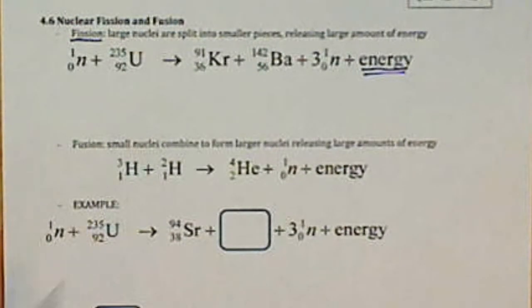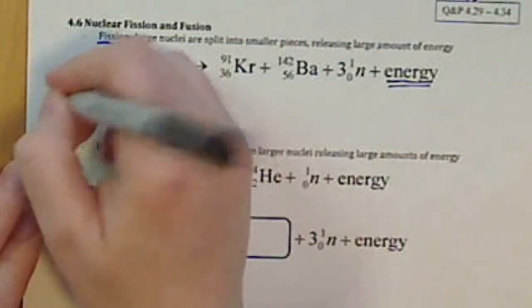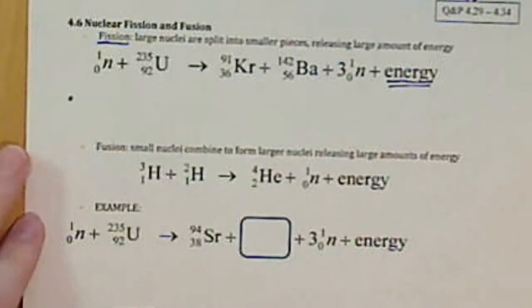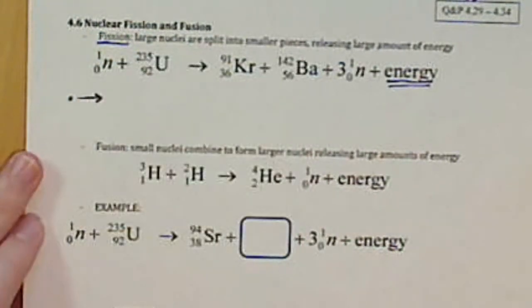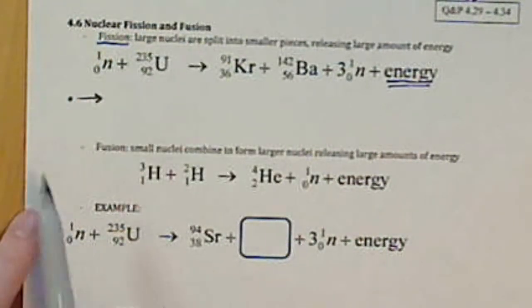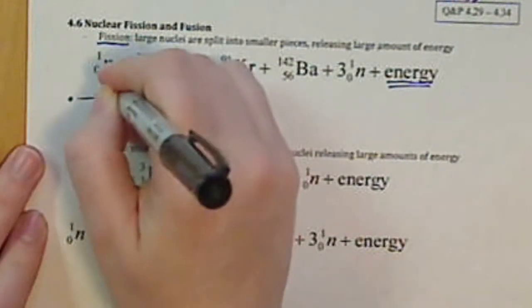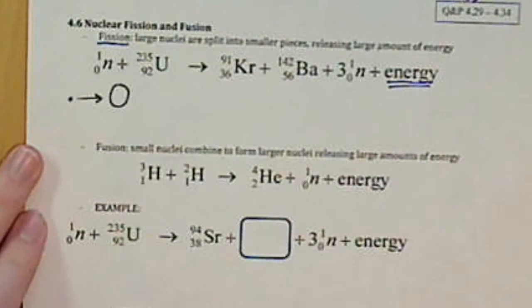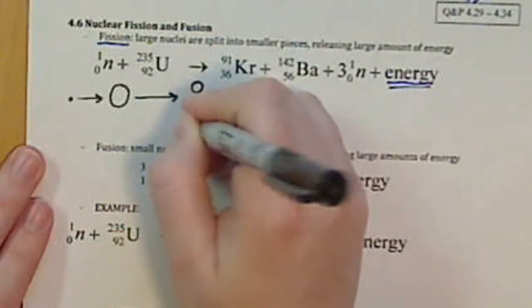Now, how this works is we have a neutron, a small particle. And we are going to fly that, we are going to get that particle moving very, very quickly. And we're going to fly that into a really large nucleus. And that nucleus is going to split apart into two smaller ones.